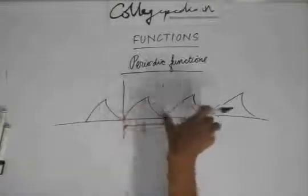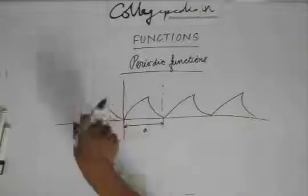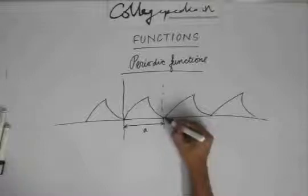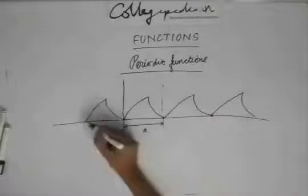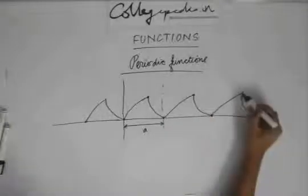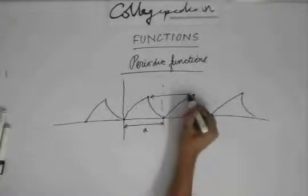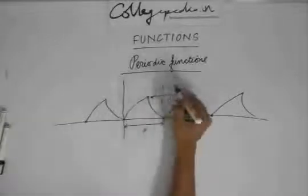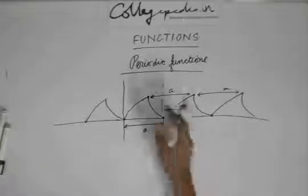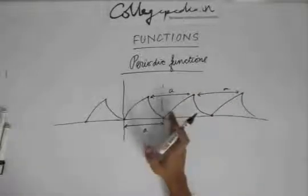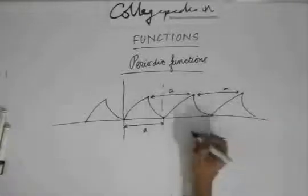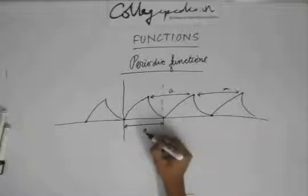You can see that this portion is the same as this portion, and the same as this portion. The value of y at this point is the same as the value of y at this point, and at this point. Similarly, the value of y at this point is the same as the value of y at this point. The gap between corresponding points is A. So this is what a periodic function is — the function which repeats after some fixed interval is said to be a periodic function. And the period of that function is nothing but this interval A.